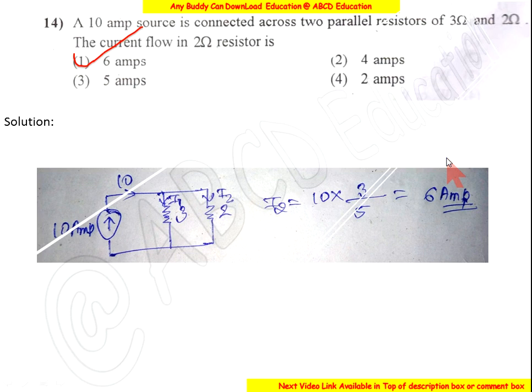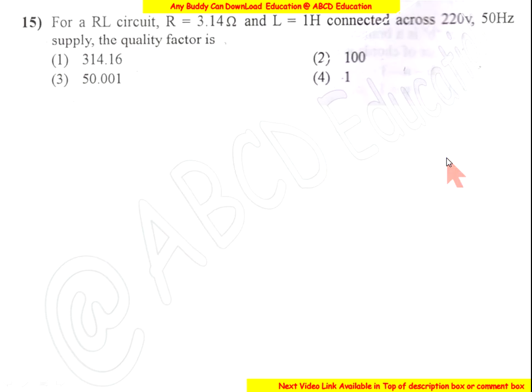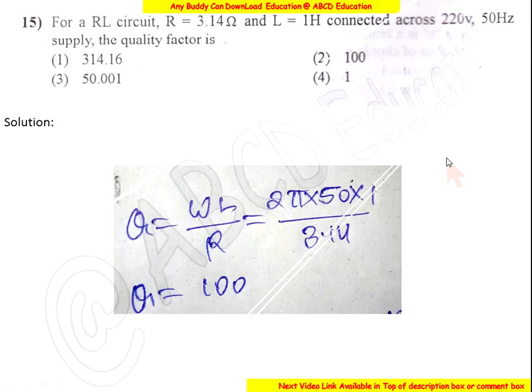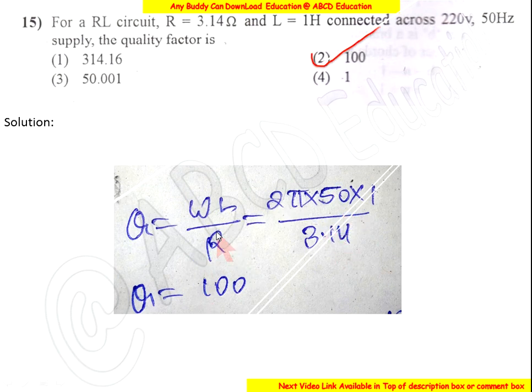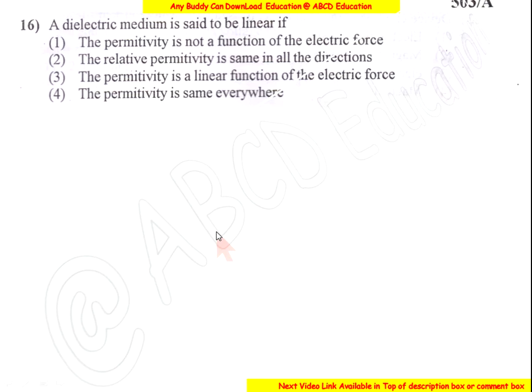For an RL circuit with given values of R and L connected across a 250 Hz supply, the quality factor Q = ωL/R = 2πfL/R. Calculating gives Q = 100, which is option B.